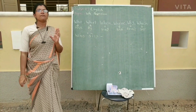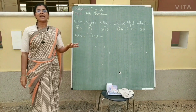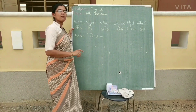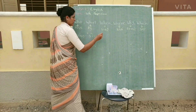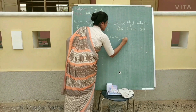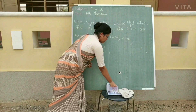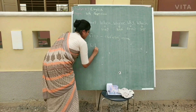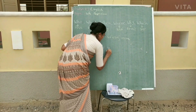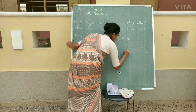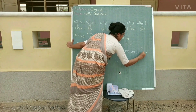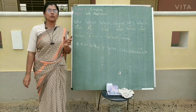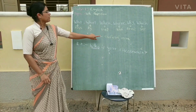Who નો ઉપયોગ ક્યારે થાય — જ્યારે વ્યક્તિ વિશે આપણને જાણવું હોય. ઉદાહરણ: તમારા class teacher નું નામ શું છે? — Who is your class teacher? — જ્યારે આ પ્રકારનો પ્રશ્ન પૂછો ત્યારે Who વાપરો.